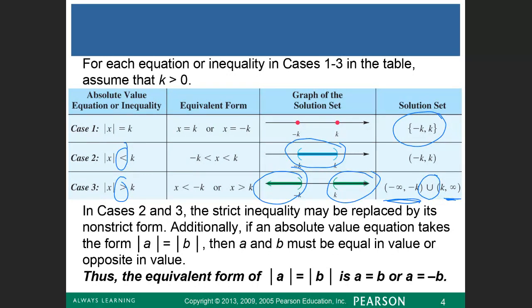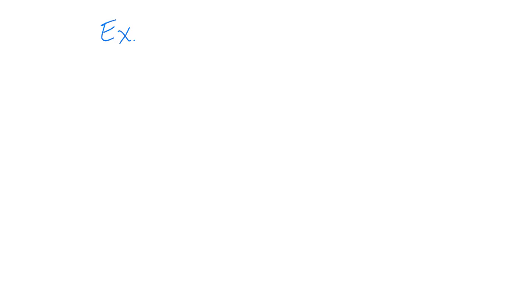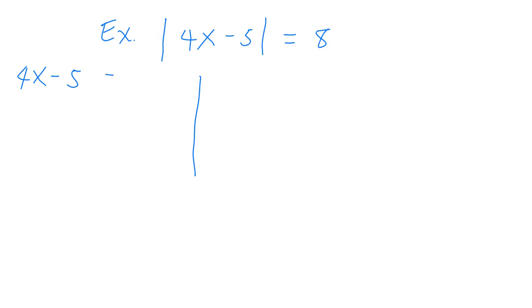Let's take our first example. We have 4x minus 5 inside the absolute value symbol equals 8 — we call this an absolute value equation. There are two solutions: 4x minus 5 equals 8, and 4x minus 5 equals negative 8.